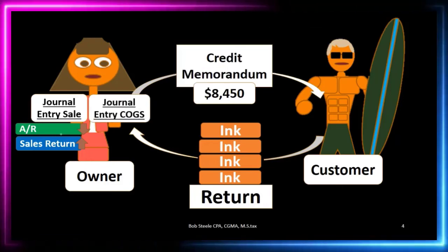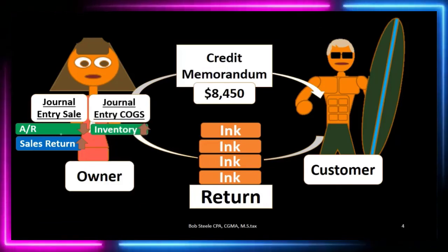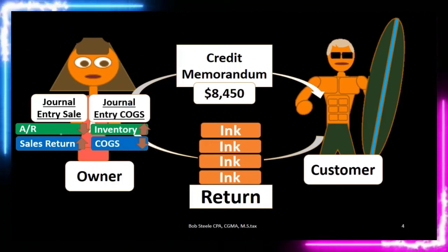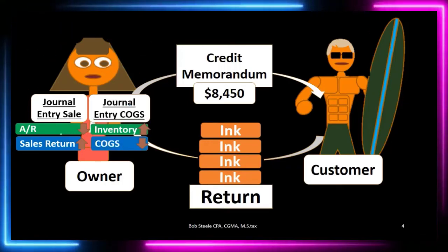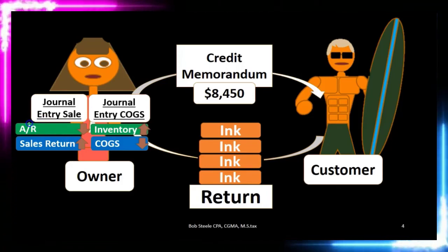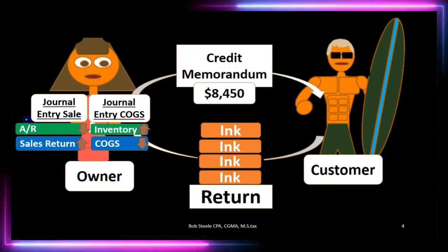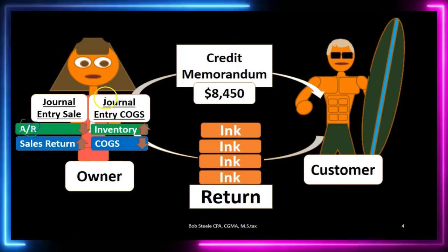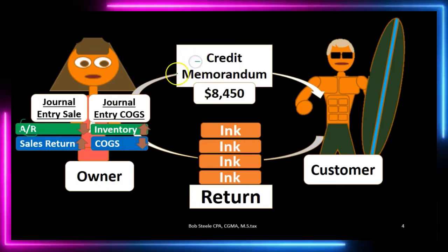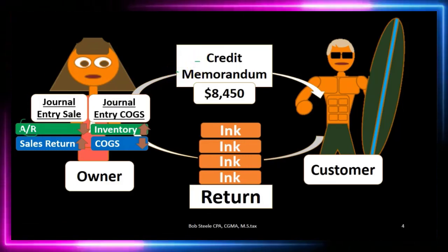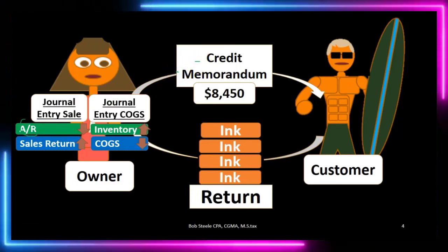We have the other side of the transaction: inventory is going back up because we're increasing the inventory, and cost of goods sold is going down. The key point here is that accounts receivable is the account being credited, which lends itself to the name credit memorandum — basically reducing the amount that is due from the customer.